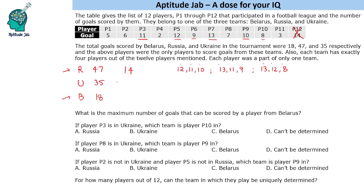Now looking at Belarus, which has 18 points. The minimum values available are 2 and 3. Suppose we do not include 2 in Belarus — if we take the next four values: 3, 5, 6, 7, that becomes more than 18. So this means we have to include 2 in Belarus. Therefore P4 is in Belarus.